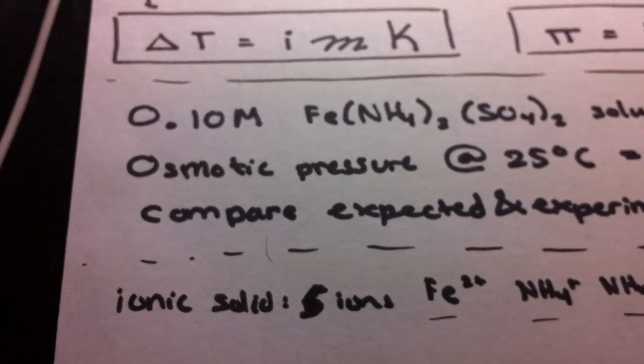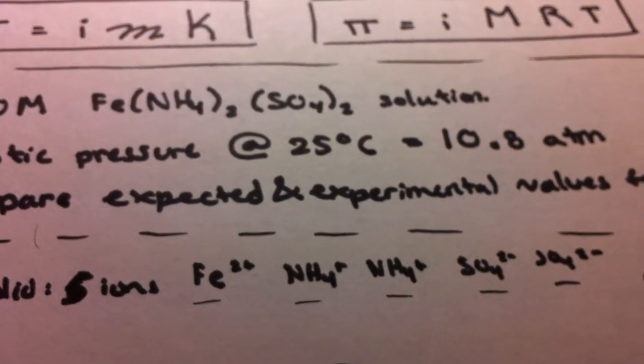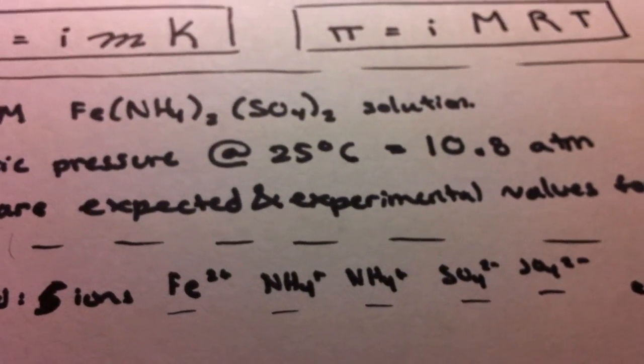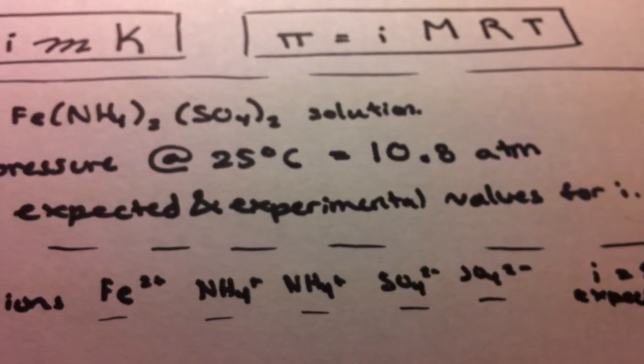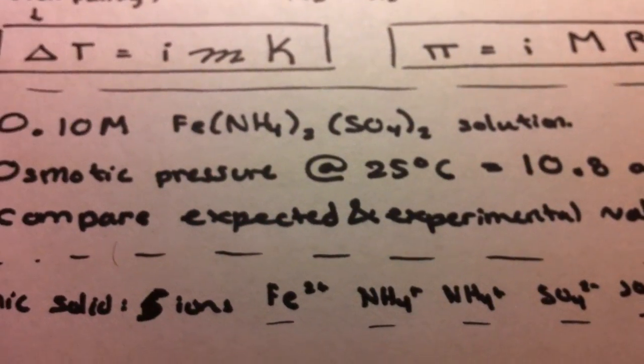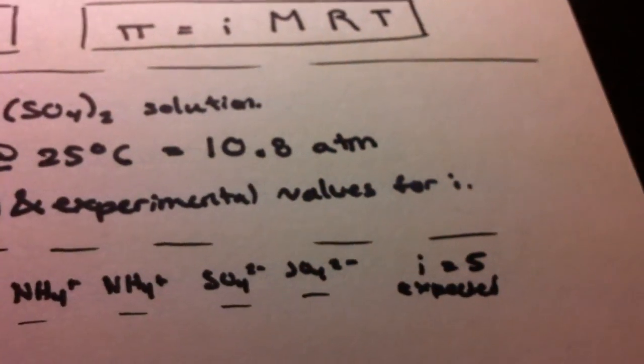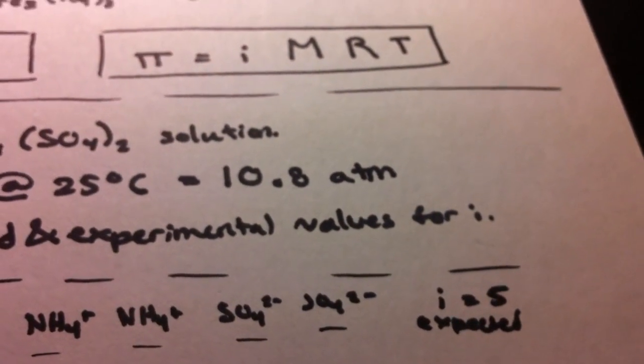This is an ionic solid, so it's going to dissociate into five separate ions. One iron ion, two ammonium ions, and two sulfate ions. So we're going to have five ions total. Therefore, our i value expected will be 5.